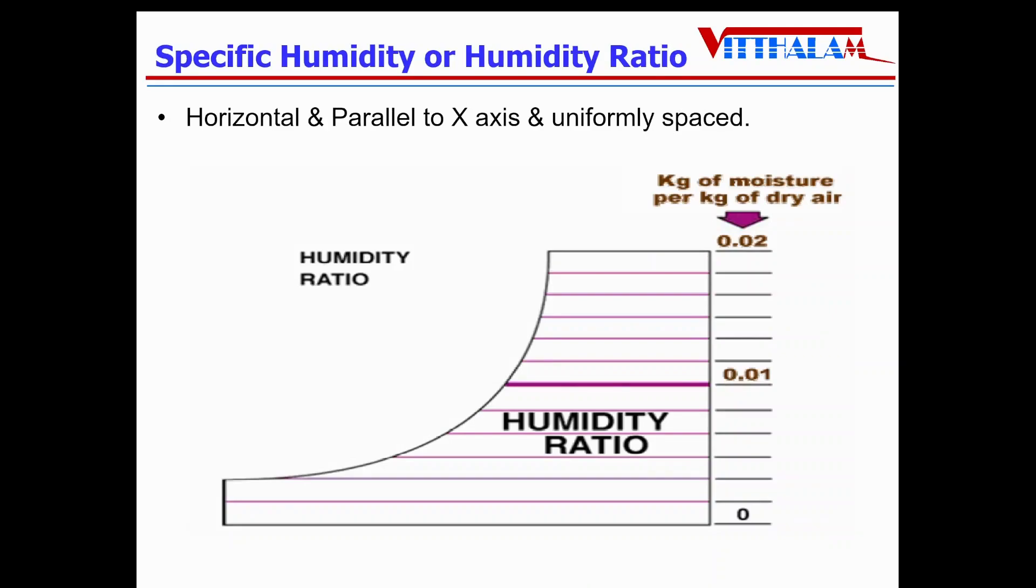Specific humidity or humidity ratio or humidity factor is on y-axis. It is horizontal lines that is parallel to x-axis and uniformly spaced. Unit of specific humidity is kg of moisture per kg of dry air.